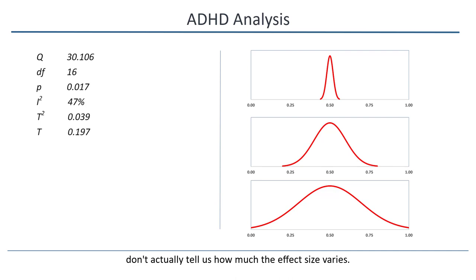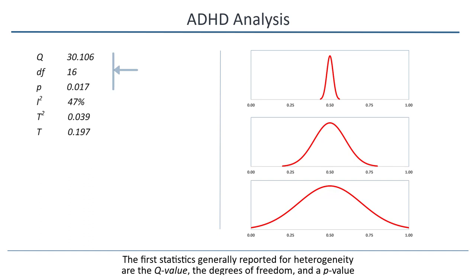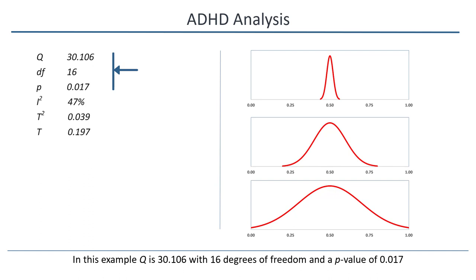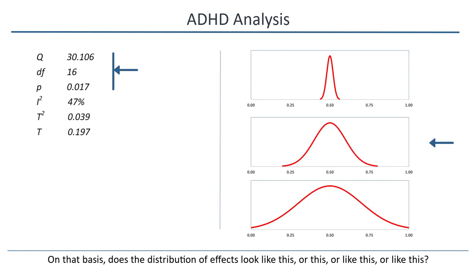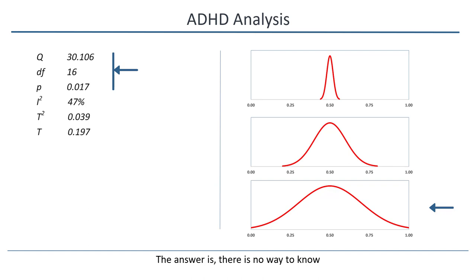These are the statistics typically reported for heterogeneity. The first statistics generally reported are the Q-value, the degrees of freedom, and a p-value. In this example, Q is 30.106 with 16 degrees of freedom and a p-value of 0.017. On that basis, does the distribution of effects look like this, or like this, or like this? The answer is there's no way to know. Given this Q-value and p-value, it could be any of these.